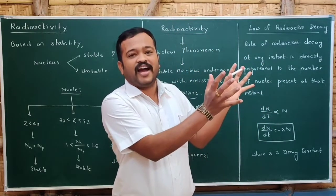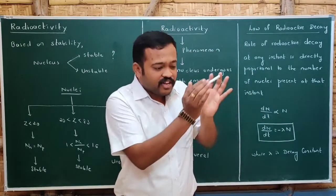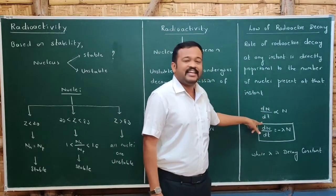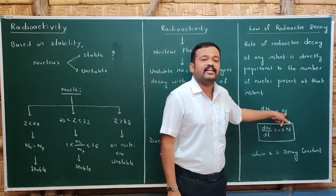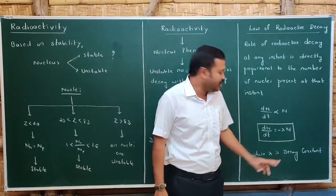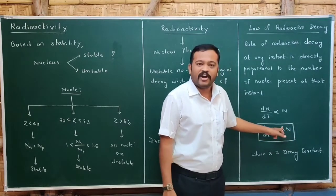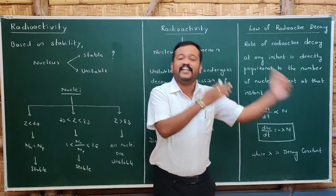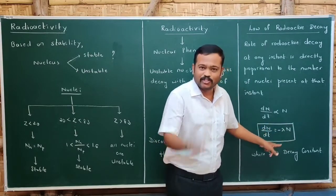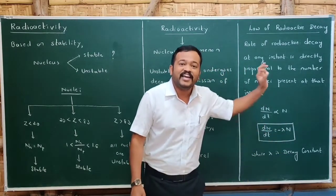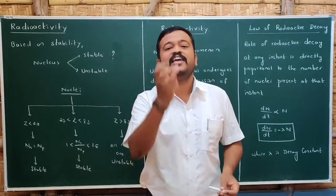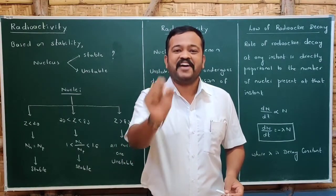If there are a large number of nuclei at an instant, the decay will be fast; as the number of nuclei decreases, the decay rate also decreases. Mathematically, dN/dt is directly proportional to N, where N is the number of nuclei present at that instant. Removing the proportionality gives a constant, taken as minus lambda: dN/dt = −λN. Lambda is the decay constant, and the negative sign indicates the number of nuclei is decreasing.